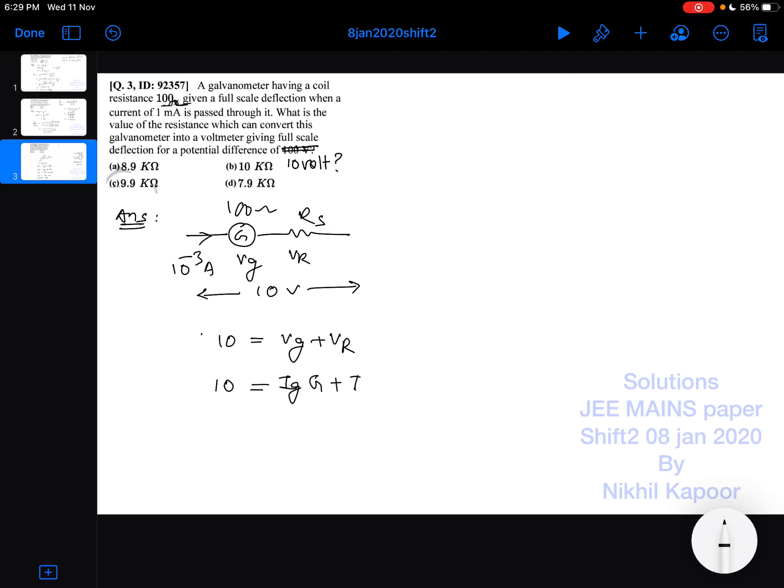So 10 will be equal to Ig taken as common, times G plus R. So 10 will be equal to 10 raised to minus 3 into (100 plus R).